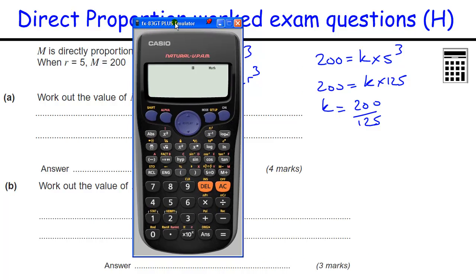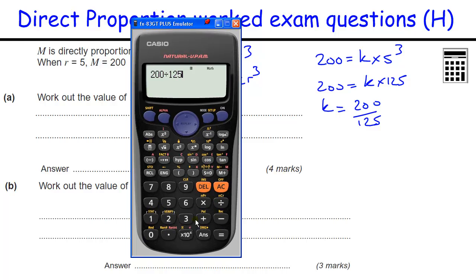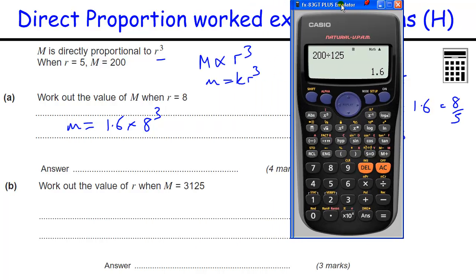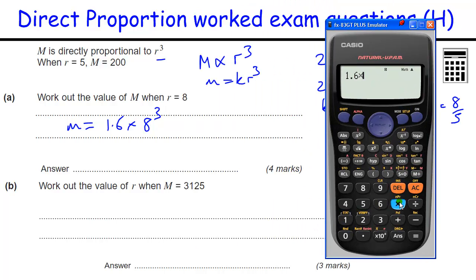You'd like to use a calculator on this one. 200 divided by 125 becomes 8 fifths, which is 1.6. So we can have 1.6 or 8 over 5, either is fine. So that's our equation: M equals 1.6R cubed. Now we want to find the value of M when R is 8, so M equals 1.6 times 8 cubed. Again using the calculator, 1.6 times 8 cubed, and we get 819.2 for 4 marks.